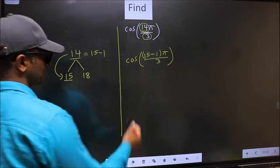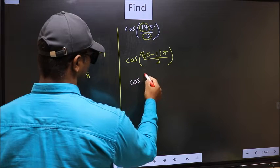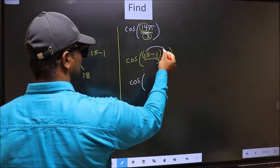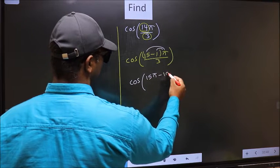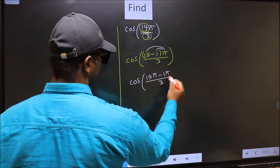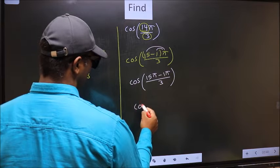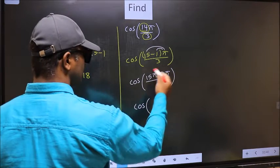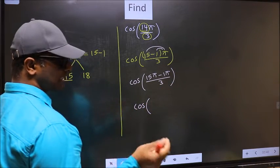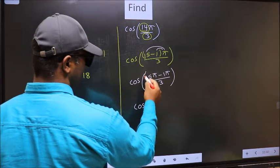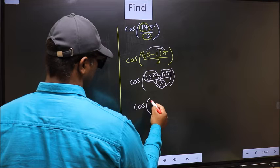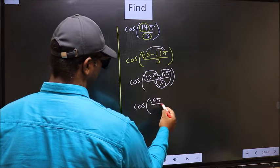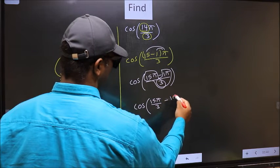Next, cos. Now you should open up the brackets. We get 15π minus 1π by 3. Now cos, in this, you should split the denominator in this way. That is 15π by 3 minus 1π by 3.